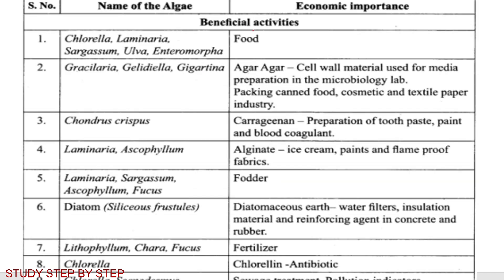Summary of economic importance — beneficial activities: Chlorella, Laminaria, Sargassum, Ulva, and Enteromorpha are used as food. Agar agar from Gracilaria and Gelidium is used as a medium in microbiological labs. Carrageenan from Chondrus crispus is used in preparation of toothpaste, paint, blood coagulant, etc. Algin from Laminaria and Ascophyllum is used in paints and fireproof fabrics. Laminaria, Sargassum, and Fucus are used as fodder. Diatomaceous earth has industrial uses. Lithophyllum is used as fertilizer. Chlorellin from Chlorella is an antibiotic useful against gram-positive and gram-negative bacteria.